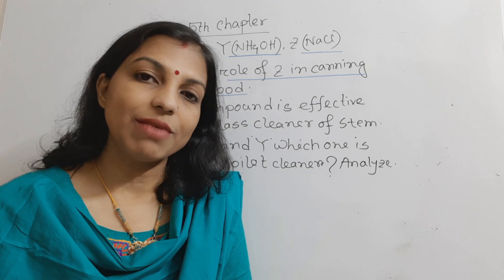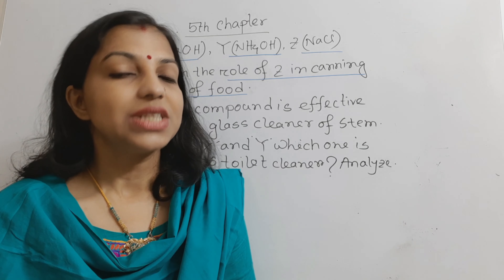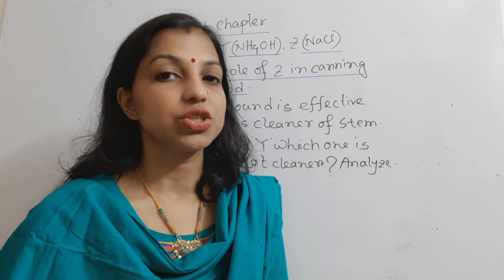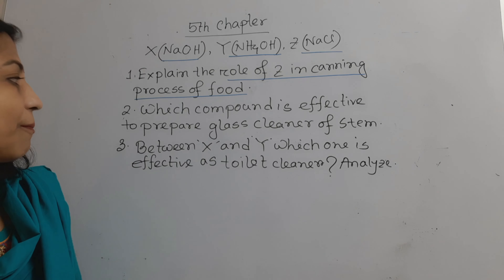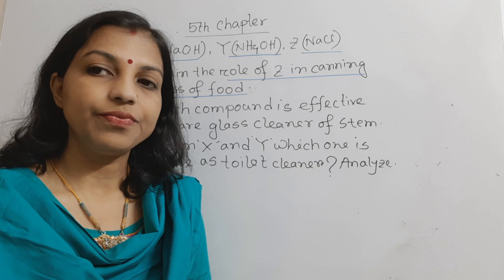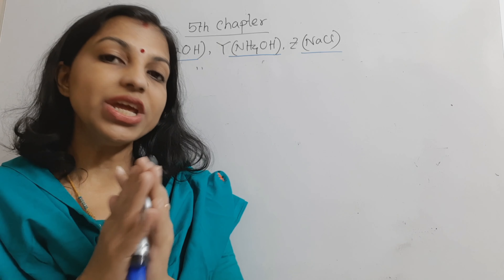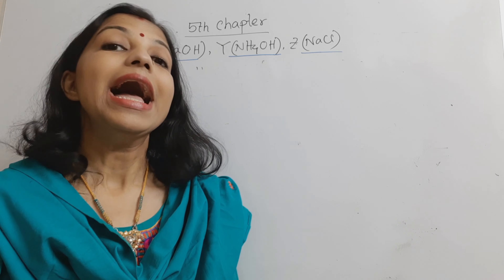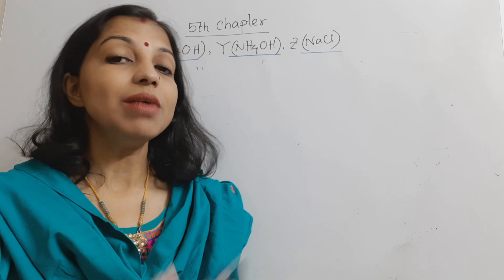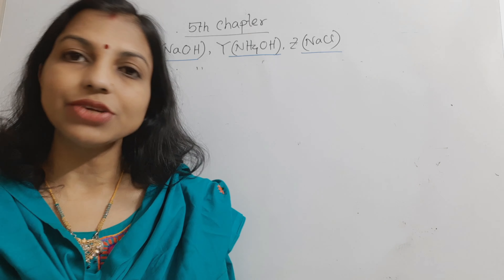That is the answer to question one. Now, question two: which compound is effective to prepare glass cleaner for steel? The mixture of ammonium hydroxide, rubbing alcohol, and water is known as glass cleaner. Why is ammonium hydroxide used and not sodium hydroxide?